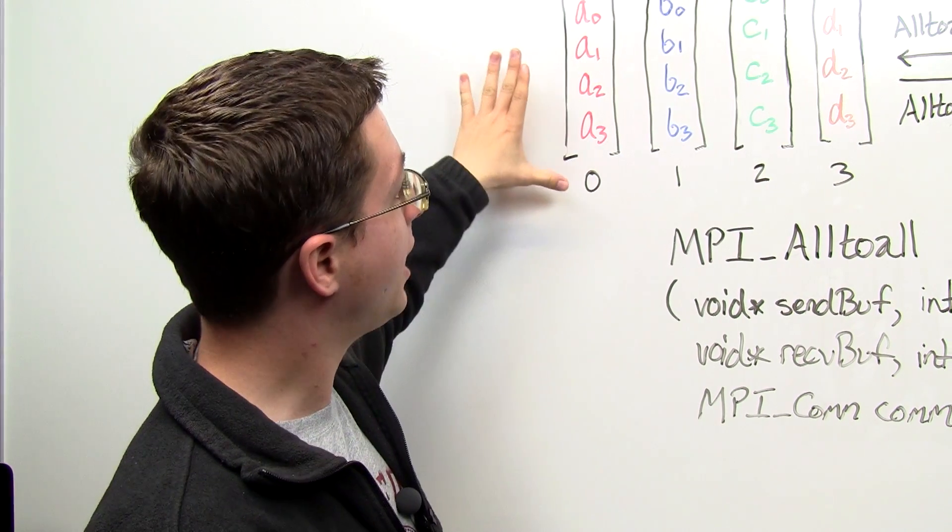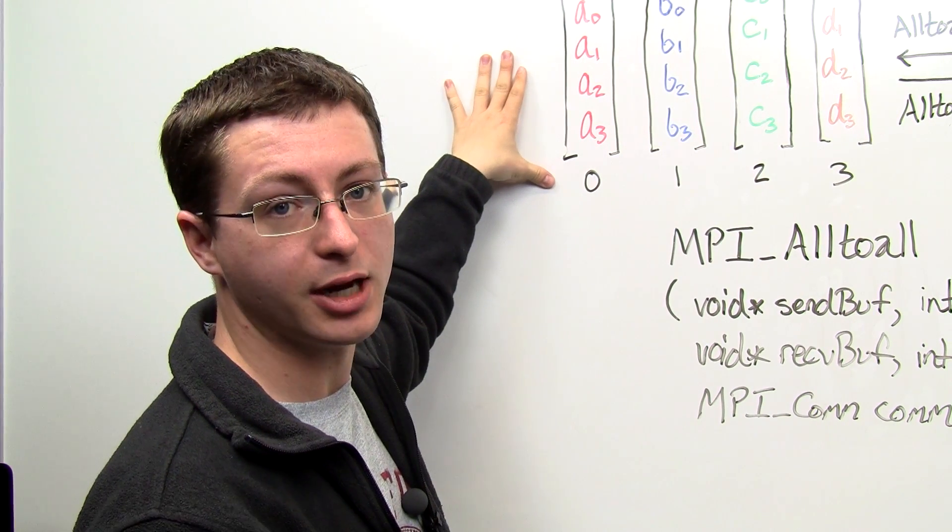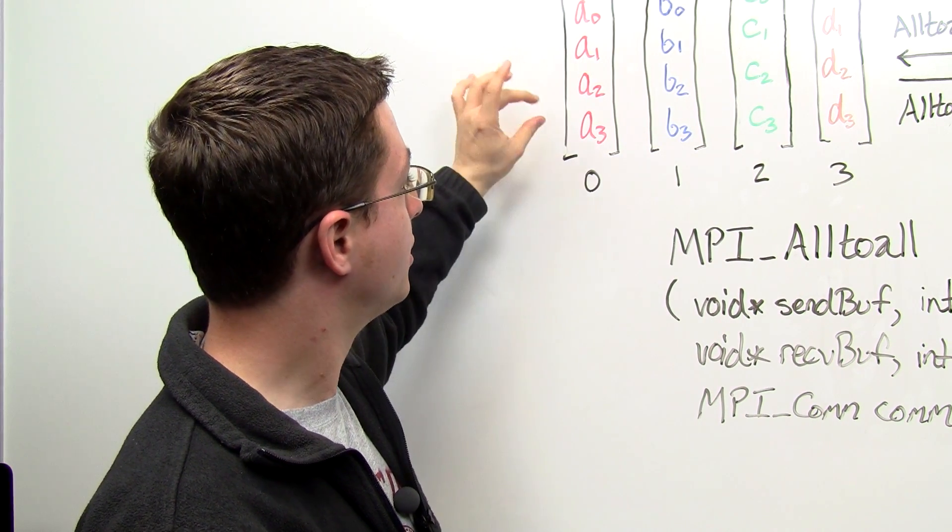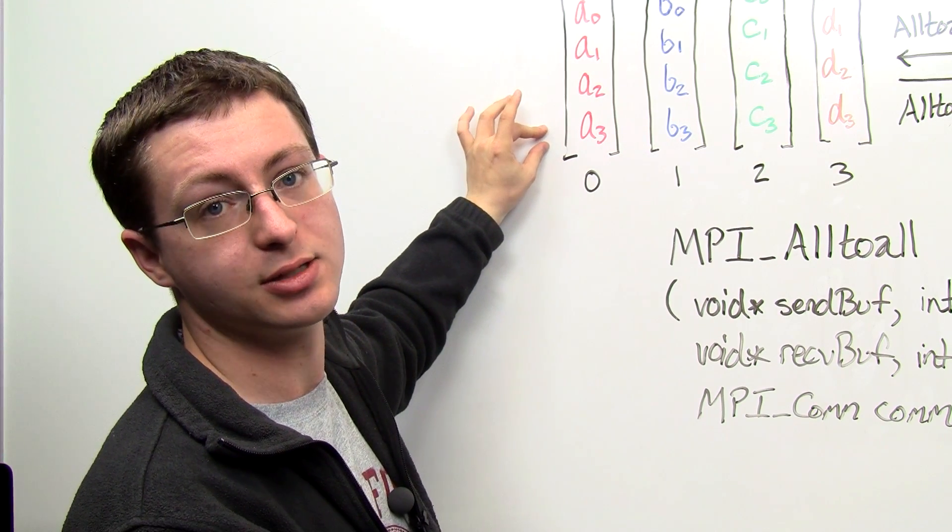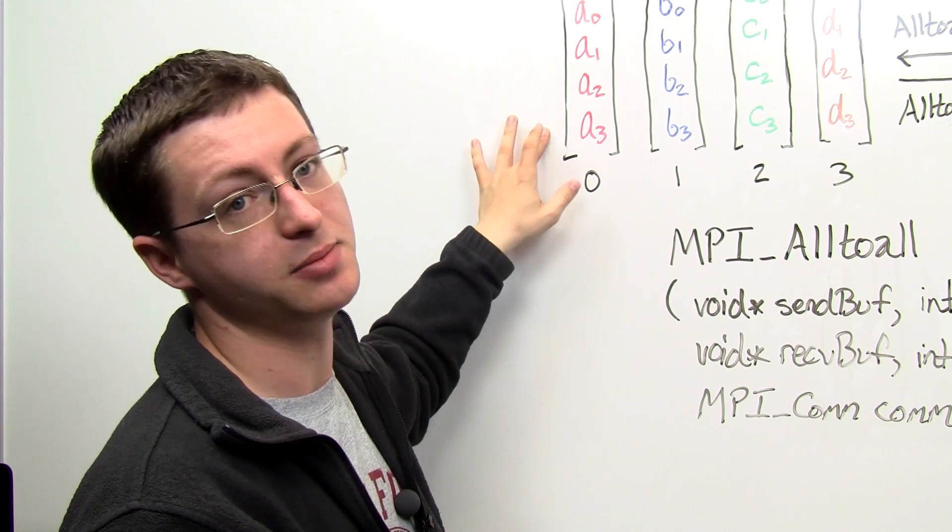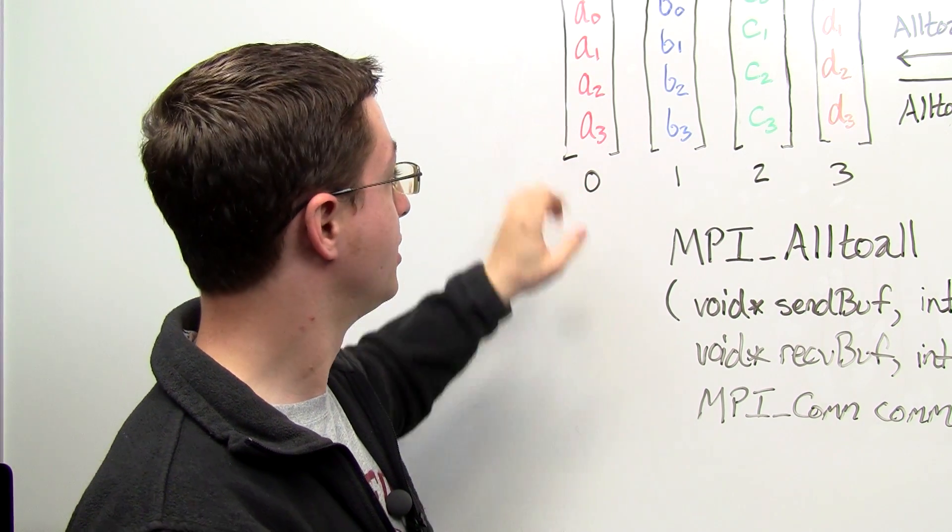So the idea is that after we call this routine MPI all-to-all, the ith subset on the jth process will end up in the jth subset of the ith process. So for instance,